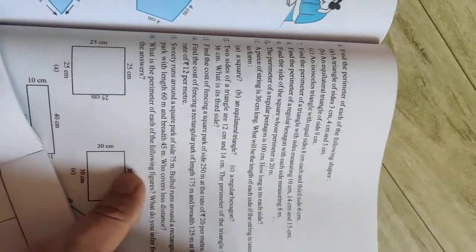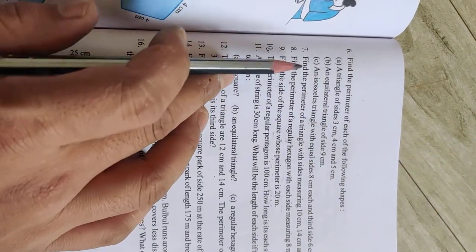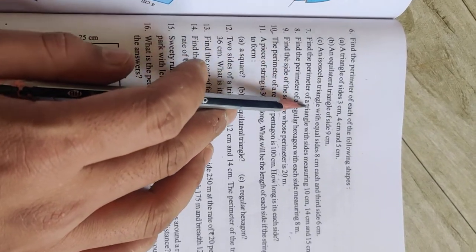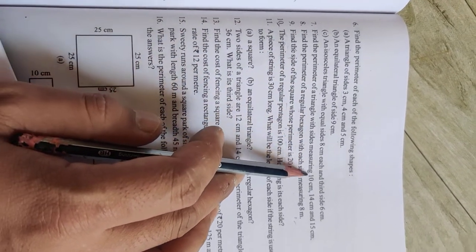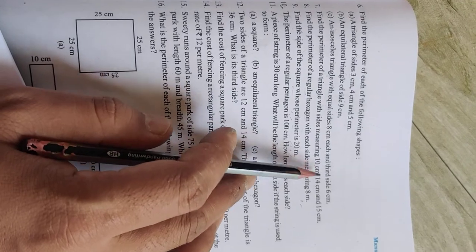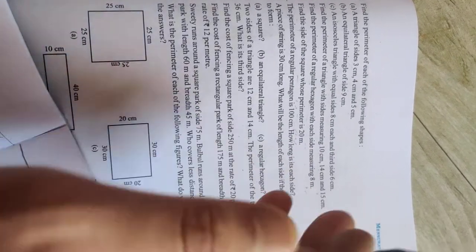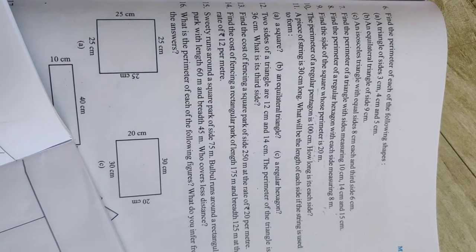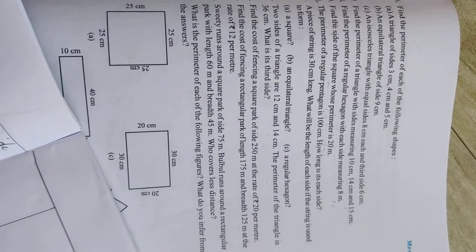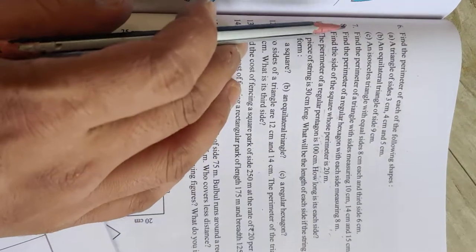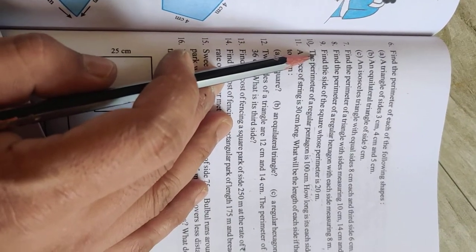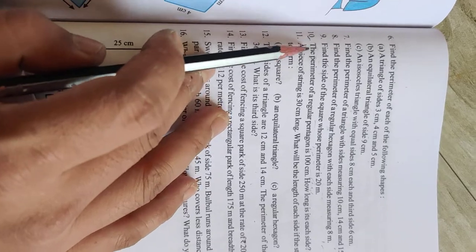Number seven: find the perimeter of a triangle with sides measuring 10 centimeters, 14 centimeters, and 15 centimeters. All sides are given, so add all the sides to find the perimeter.